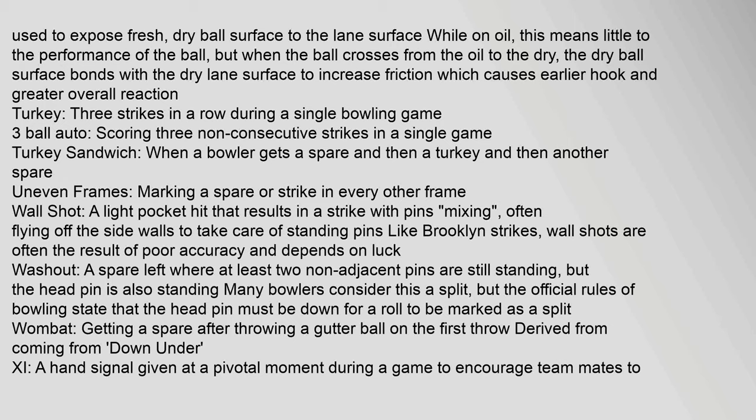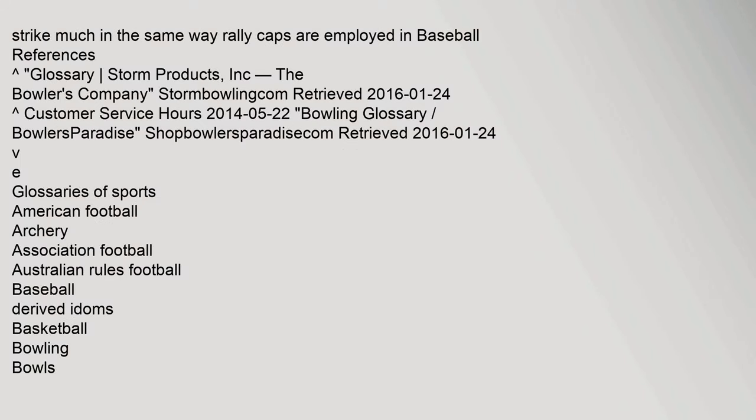Turkey sandwich: when a bowler gets a spare, then a turkey, then another spare — uneven frames marking a spare or strike in every other frame. Wall shot: a light pocket hit that results in a strike with pins mixing, often flying off the side walls to take care of standing pins; like brooklyn strikes, wall shots are often the result of poor accuracy and depend on luck. Washout: a spare left where at least two non-adjacent pins are still standing but the head pin is also standing — unlike a split, where the head pin must be down. Wombat: getting a spare after throwing a gutter ball on the first throw, derived from 'coming from down under.' 11: a hand signal given at a pivotal moment during a game to encourage teammates to strike, much as rally caps are employed in baseball.